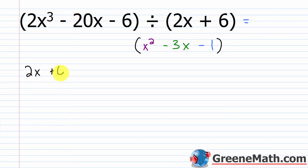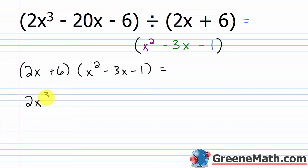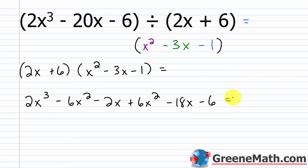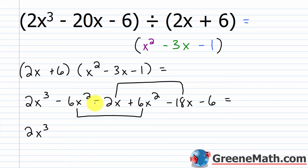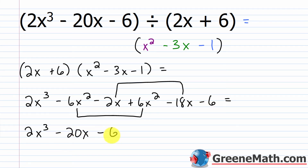So let's multiply 2x plus 6 times x squared minus 3x minus 1. 2x times x squared is 2x cubed; 2x times negative 3x is minus 6x squared; 2x times negative 1 is minus 2x. Then 6 times x squared is plus 6x squared; 6 times negative 3x is minus 18x; 6 times negative 1 is minus 6. Combining like terms: 2x cubed, then negative 6x squared plus 6x squared is 0, then negative 2x minus 18x is negative 20x, then minus 6. That completely matches 2x cubed minus 20x minus 6, so we know we have the correct answer.